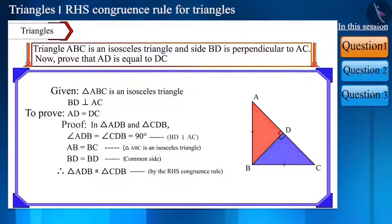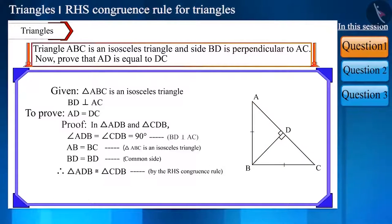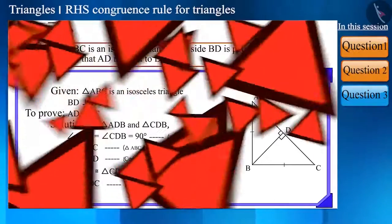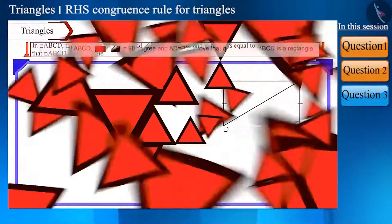The corresponding sides of the congruent triangles are equal. Therefore, side AD is equal to side CD, or we can say that side AD is equal to side DC. Let's see the next question.